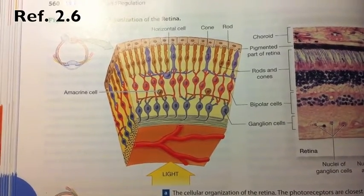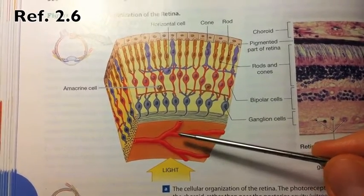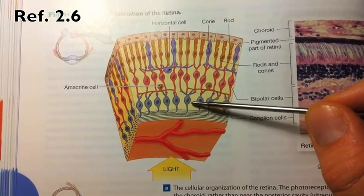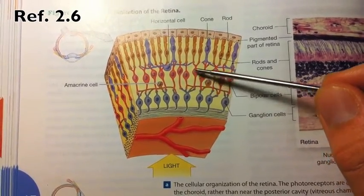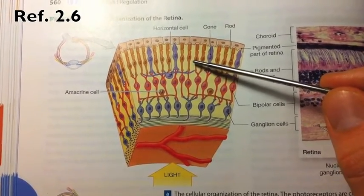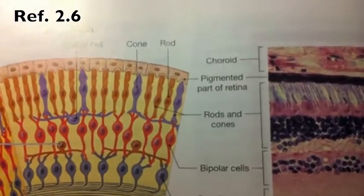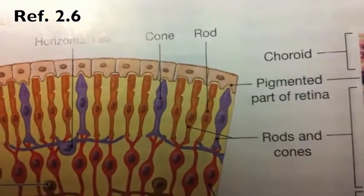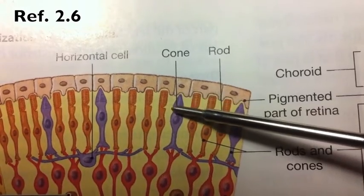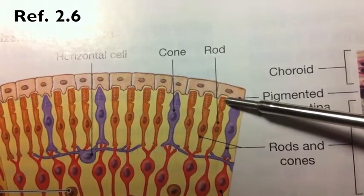Here we can see the newly formed neuroepithelium layer. Light comes in towards the retina, and the first cells it encounters are the ganglion cells, connected to the bipolar cells, which in turn connect to the photoreceptors — the rods and cones. Zooming in, we can understand why they're given their names based purely on their appearance: the cone has a triangular cone shape at the top, while the rod has a more rectangular shape.